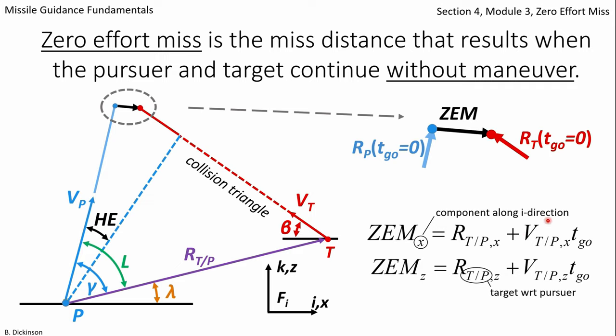And then relative velocity of target with respect to pursuer, so summing these two vectors, we have a relative velocity vector, again aligned with the i direction here.